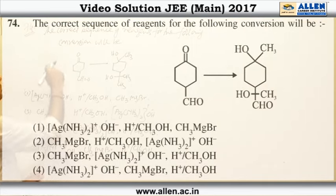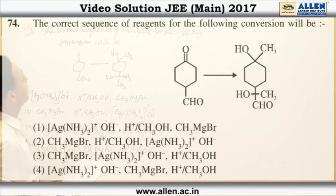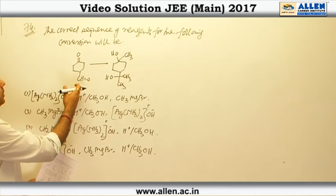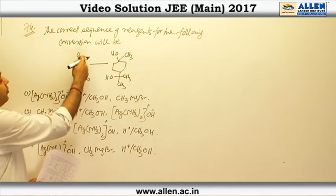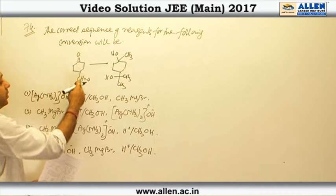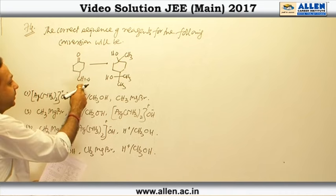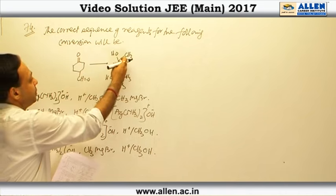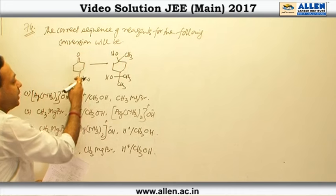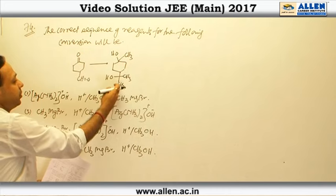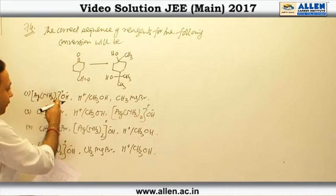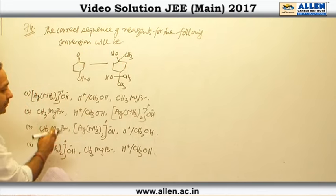The question asks for the correct sequence of reagents for the following conversions. The starting compound has two functional groups: C=O (ketone) and CHO (aldehyde). The ketone is converted into a tertiary alcohol, and the aldehyde is also converted into a tertiary alcohol. Four options are given.